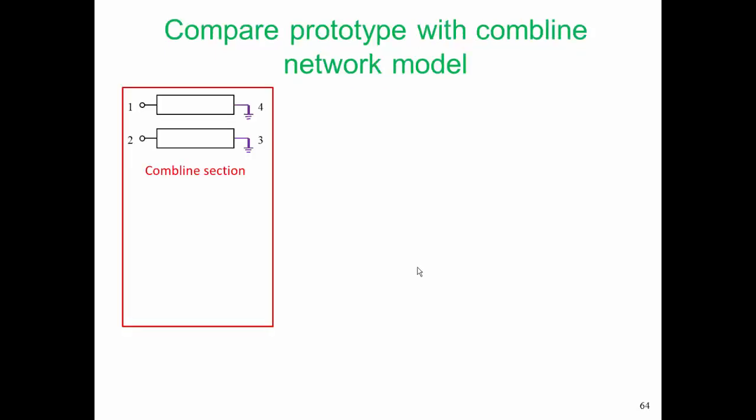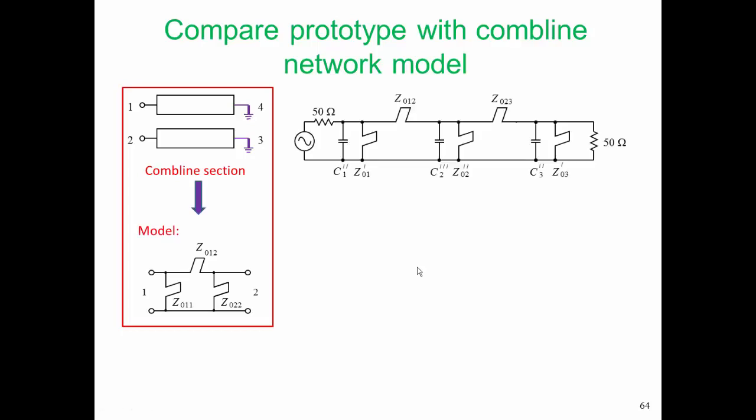So let's see how close our prototype is to the final form that we want. Here is our combline section. This is the model we're using for the combline section. Here is the current prototype for our filter. You see here a pi arrangement of shorted stubs, and if you look at our prototype, you can see two pi arrangements of shorted stubs. So we pull out the first pi and we clearly see the pi arrangement.